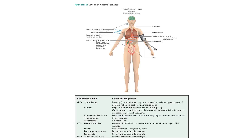The four H's and four T's are essential to know — not just for exams but also for practical clinical life. The four H's are hypovolaemia, hypoxia, hypo/hyperkalaemia, and hypothermia. The four T's are thromboembolism, toxicity, tension pneumothorax, and tamponade. For pregnancy, an additional cause to consider is eclampsia and pre-eclampsia.